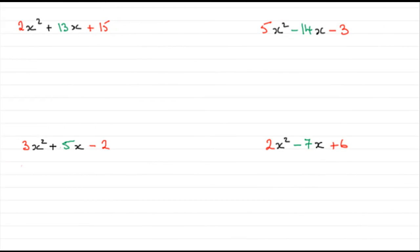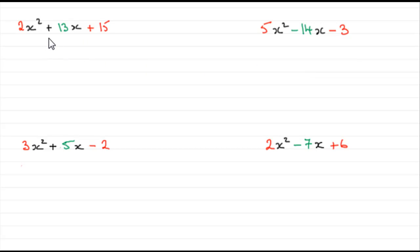Welcome to this tutorial on factorising quadratic expressions, or trinomials. I'm going to look at these special ones where we have a number other than one in front of the x squared. I've picked four examples, all different in the way of their signs: two pluses, two minuses, plus and minus, and minus and plus — so that I cover all possibilities.